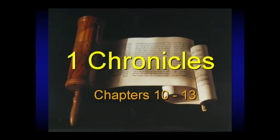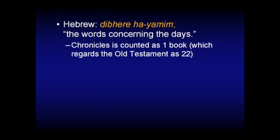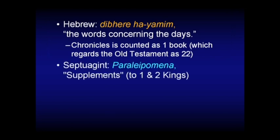We're in 1 Chronicles chapters 10 through 13. By way of a quick summary review, the word in Hebrew really means 'the words concerning the days.' Chronicles in the Hebrew Bible is counted as one book, making 22 books in the Tanakh with the same number as Hebrew letters. In the Greek translation, the Septuagint, they call it the Greek term for supplements, because the Septuagint translators regarded Chronicles, both 1 and 2, as a supplement to Samuel and Kings, especially 1 and 2 Kings.